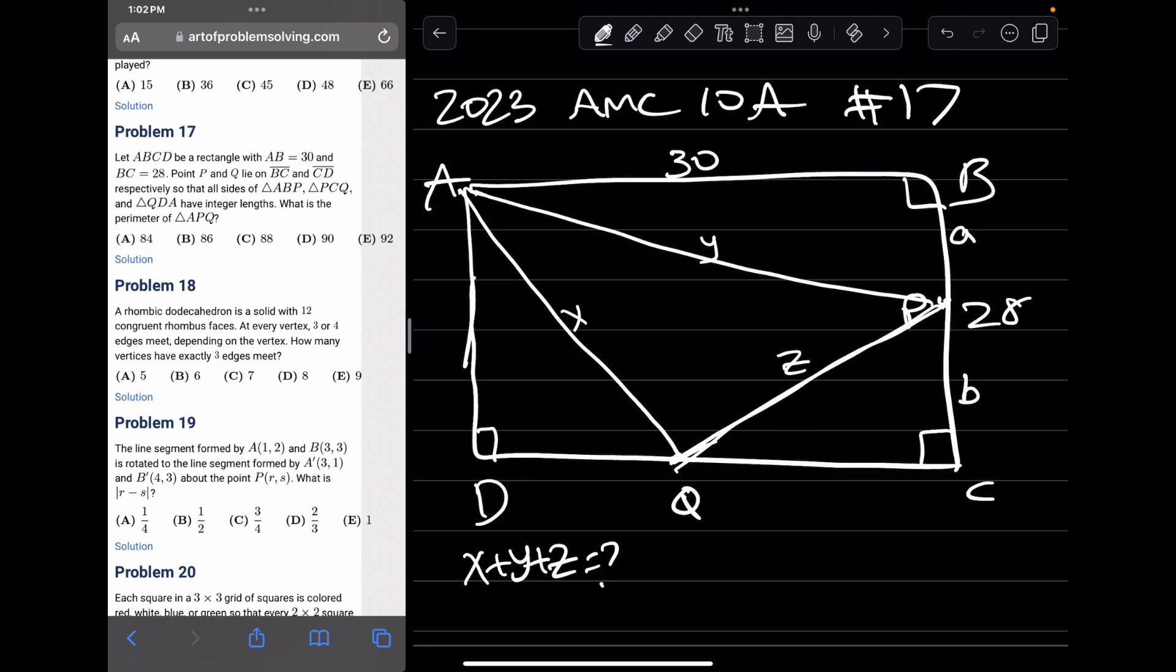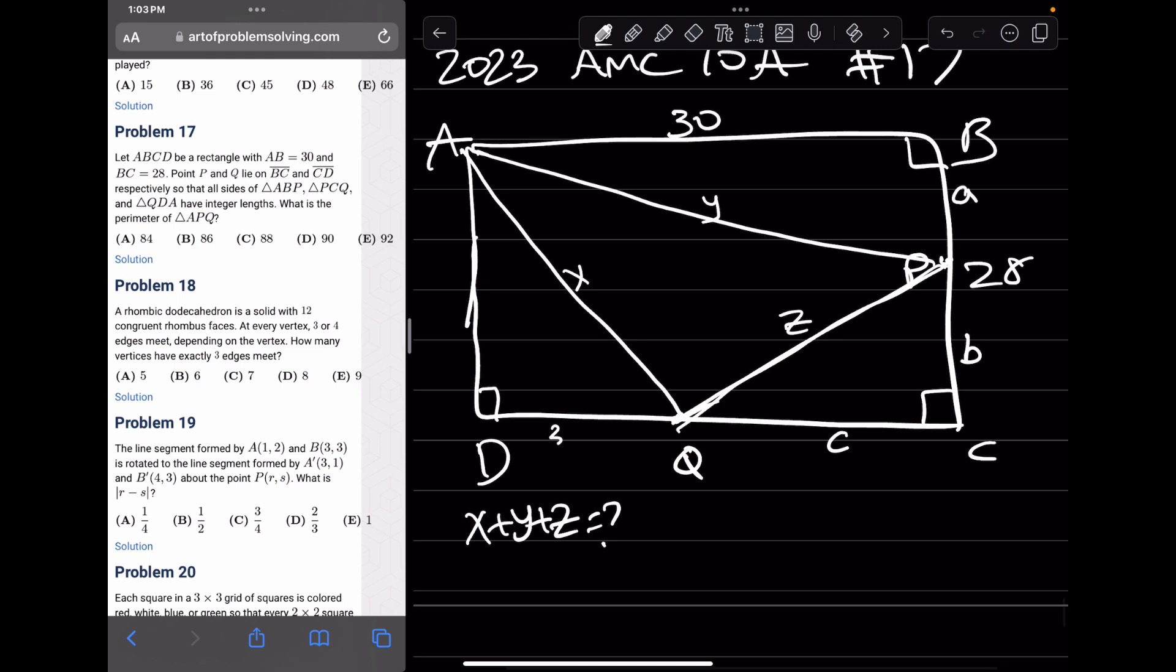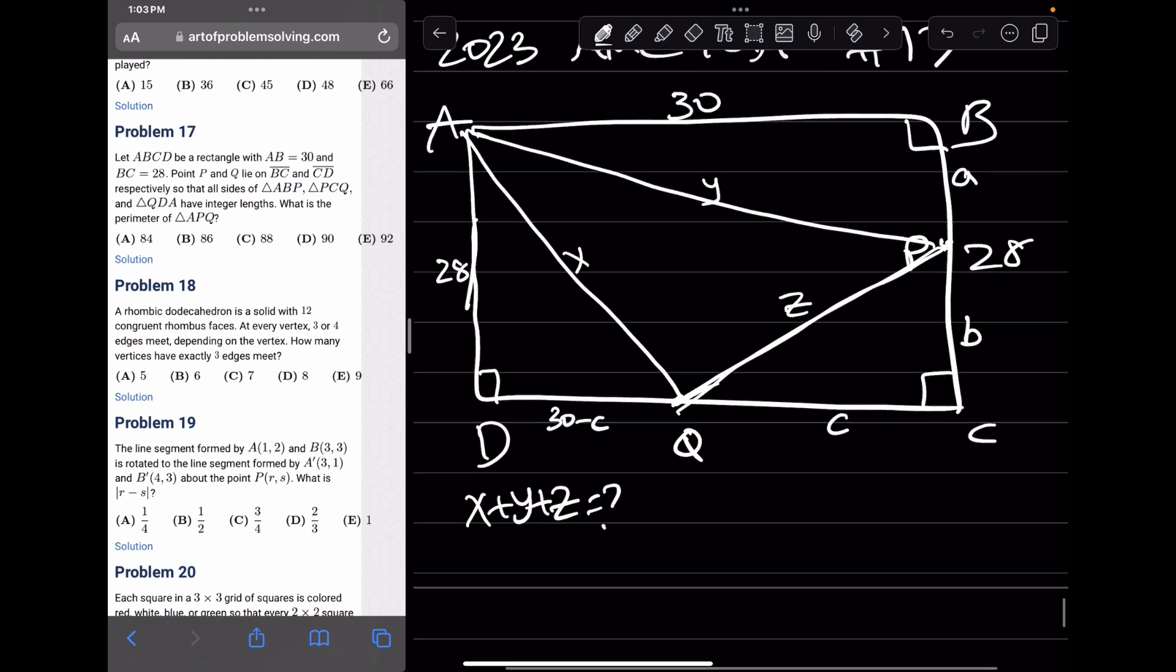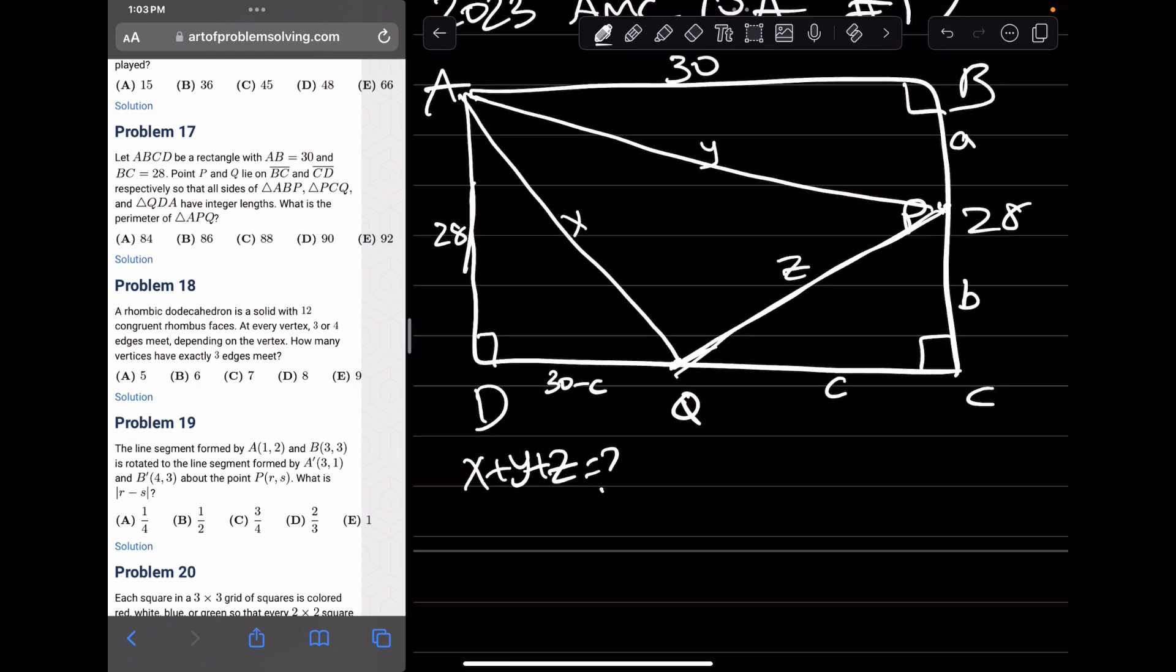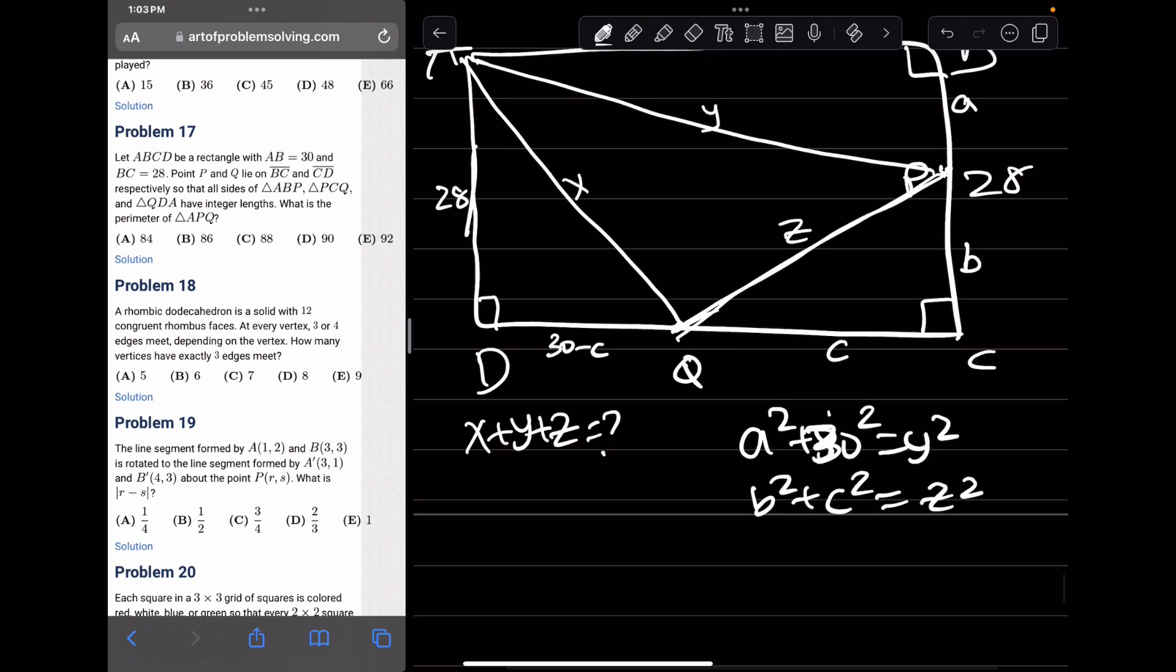Let's call this A, let's call this B, and let's call this side length C. And this is just going to be 30 minus C, and this is going to be 28 here. The Pythagorean triples, since we know A squared plus 30 squared equals Y squared, and B squared plus C squared equals Z squared. And we also want to find out what 30 minus C squared plus 28 squared equals X squared.